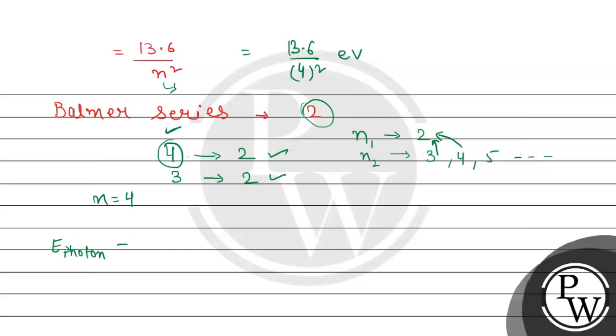Kinetic energy equals E photon minus binding energy. So we use 13 minus 13.6 divided by 4 squared. That's 13 minus 13.6 divided by 16. Dividing 13.6 by 4 gives 3.4, and 3.4 divided by 4 is 0.85. So 13 minus 0.85 equals 12.15 electron volts. This will be the answer.